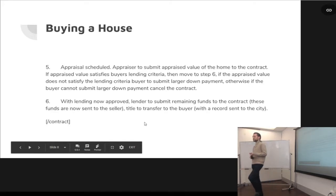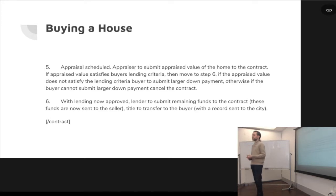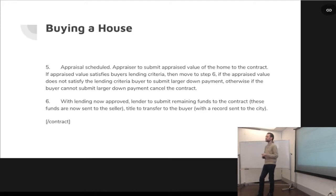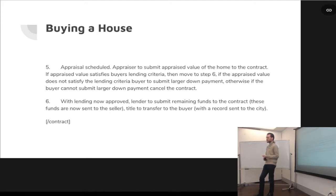Let's assume he went with the current sale price and we move to step five: the appraisal. The contract could automatically, upon reaching step five, send a notification to the appraiser — because we already stated who that is — to go out and check the value of the home. The appraiser submits his appraised value to the contract. If it satisfies the buyer's lending criteria, move to step six. If not, the buyer can either put down a larger down payment or cancel the contract.